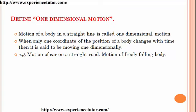Define one-dimensional motion. Motion of a body in a straight line is called one-dimensional motion. When only one coordinate of the position of a body changes with time, it is said to be moving in one dimension. Examples include motion of a car on a straight road and motion of a freely falling body.